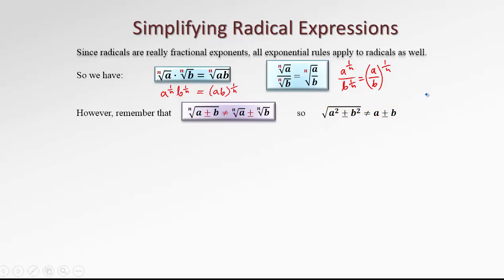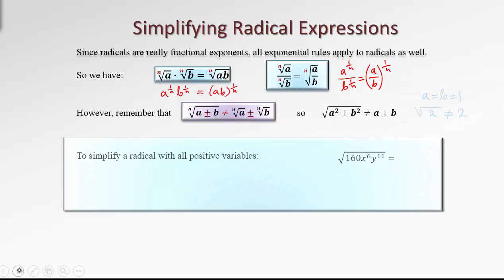For example, if a and b are 1, we can see clearly that these two sides are not equal. The left-hand side would be 1 squared plus 1 squared, so it's 2, while the right-hand side would be just 1 plus 1, so 2. Obviously, root 2 is not equal to 2.